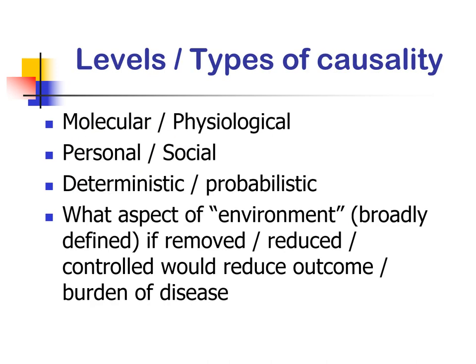These are the levels and types of causality. It could be molecular or physiological, personal and social, deterministic or probabilistic, and what aspect of the environment, if removed or altered, would reduce outcome and burden of disease.